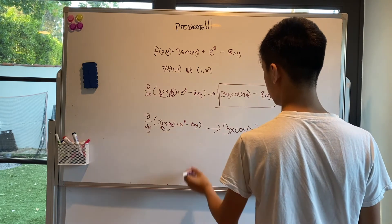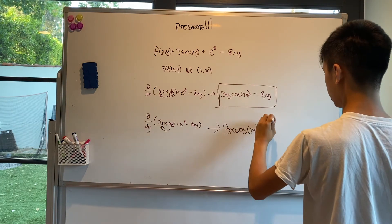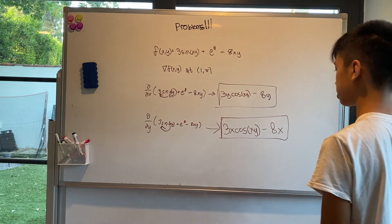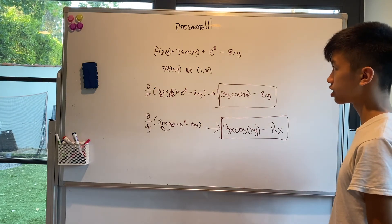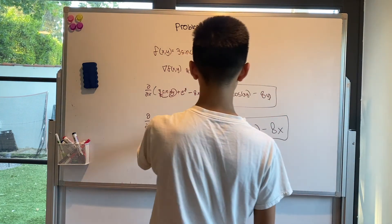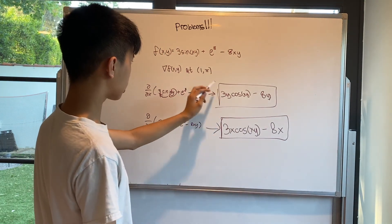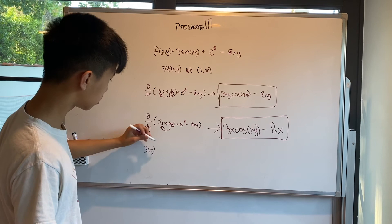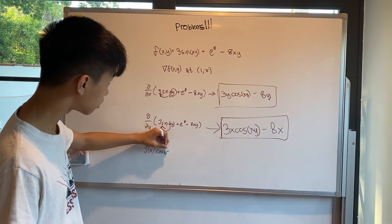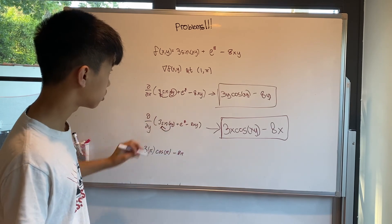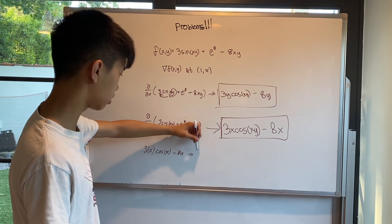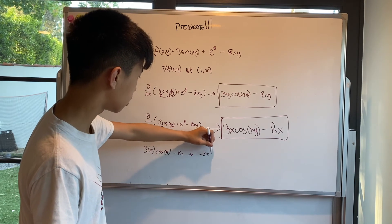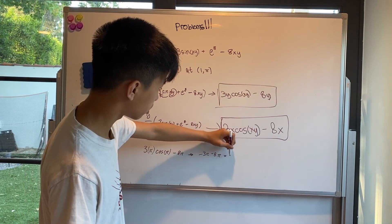This time x is our constant, so we just take the derivative with respect to y — keeping 8x. So our partial derivative with respect to y is 3x·cos(xy) − 8x. Now let's start plugging in numbers: x = 1 and y = π. So 3π·cos(π) − 8π gives us −3π − 8π, or −11π.